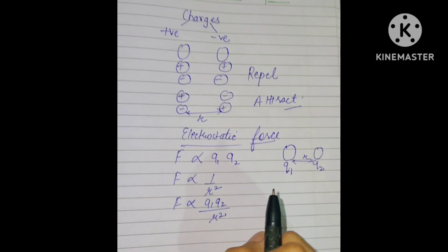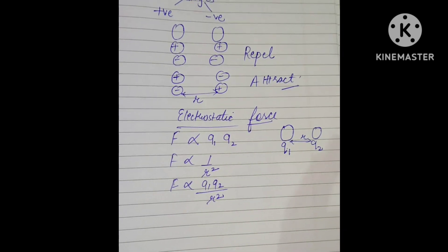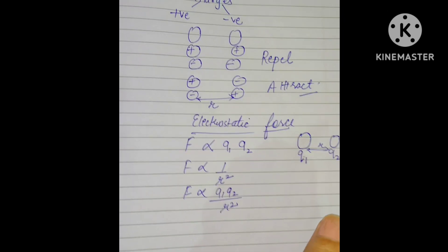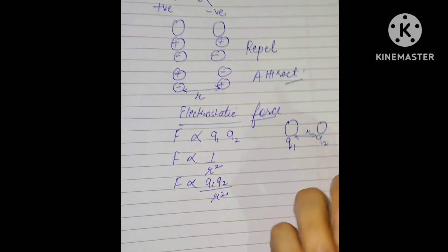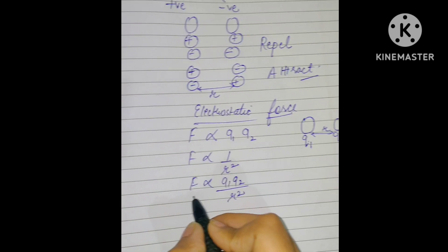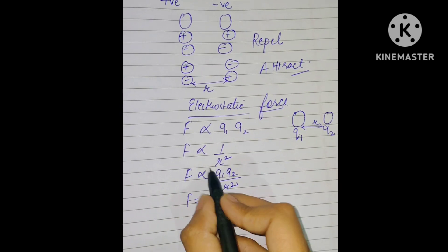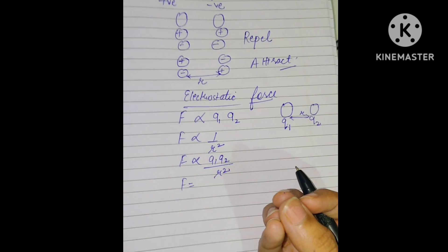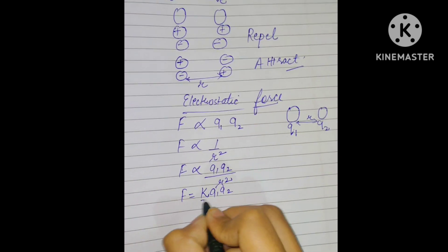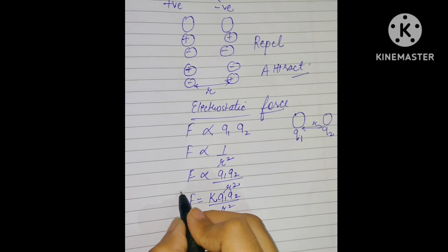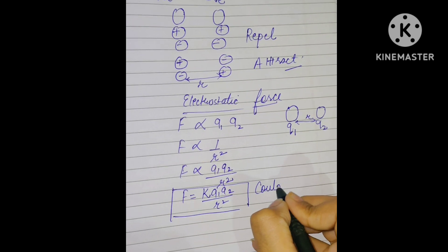You can imagine this with a magnet example: if we place a magnet at a large distance, the magnetic force will be very low. Similarly, if two charges are placed at a greater distance the force will be very less, and if placed close together the force will be very large. When we remove the proportionality sign, a constant comes in: F = k·q1·q2 / r², which is known as Coulomb's law.